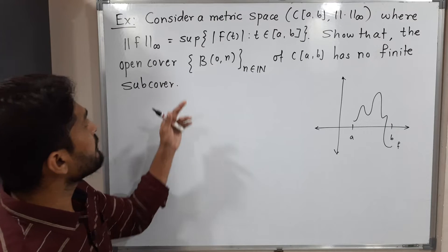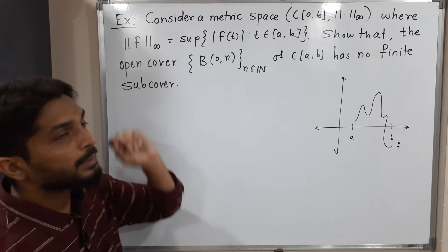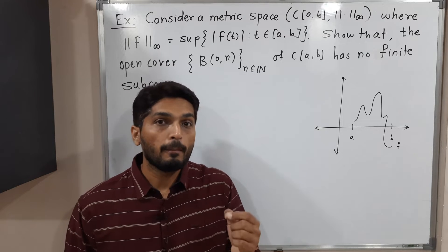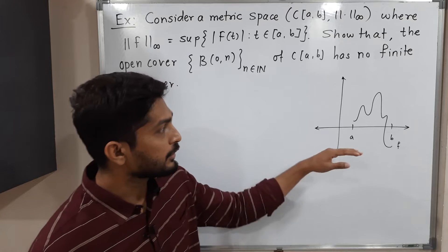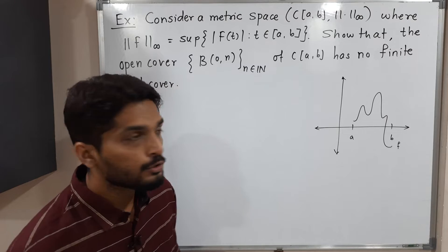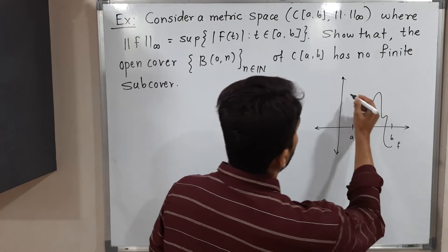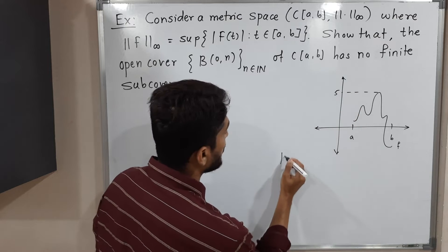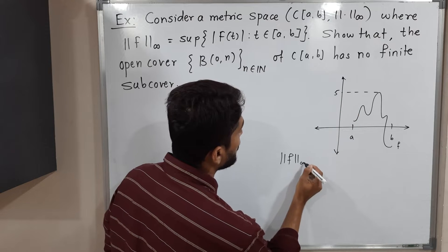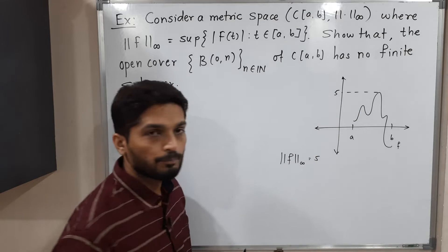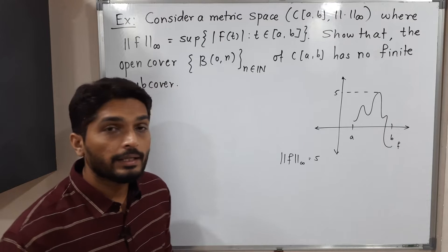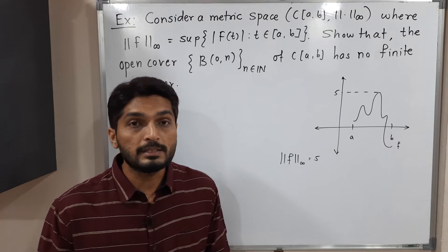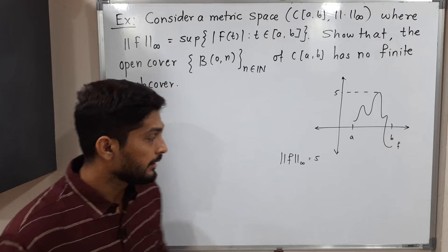The norm-infinity is defined as the supremum — it gives the maximum value of |F|. So if you have a function and its maximum value is, say, 5, then the norm of F infinity is 5. We take the supremum of |F|, meaning we do not consider the sign.